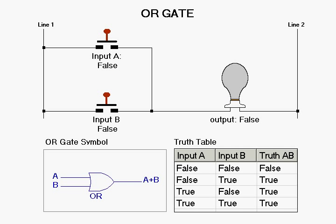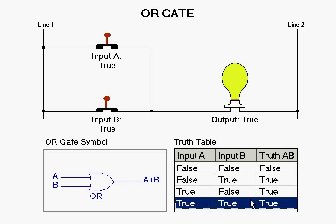Here in the truth table you can see that if both inputs are TRUE, then the output will be TRUE.